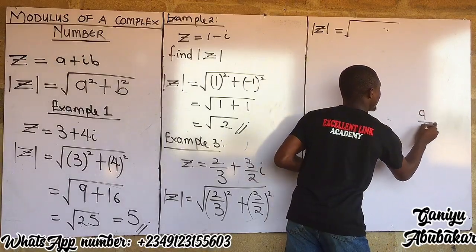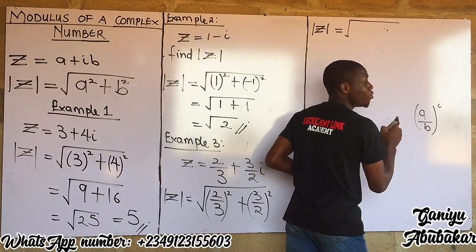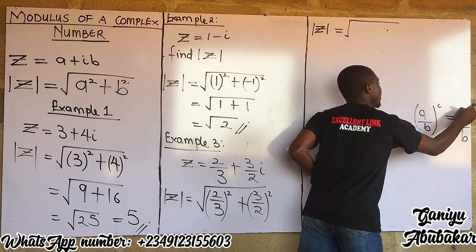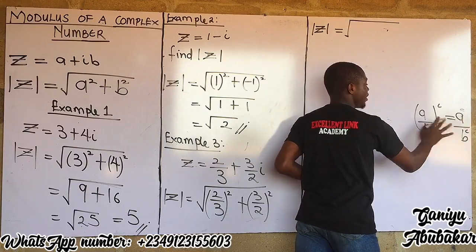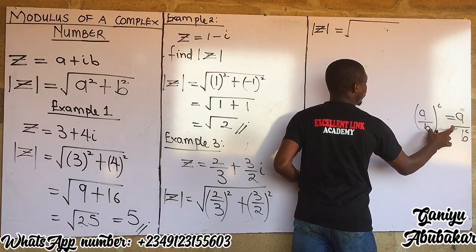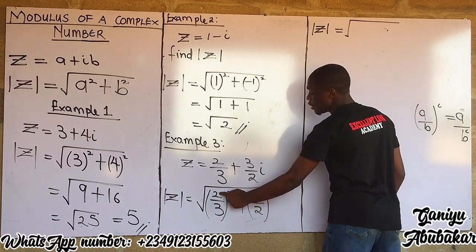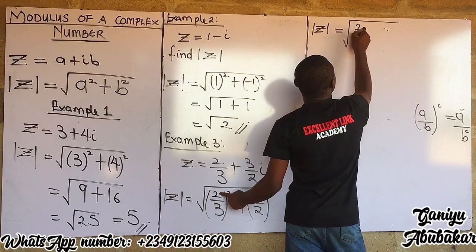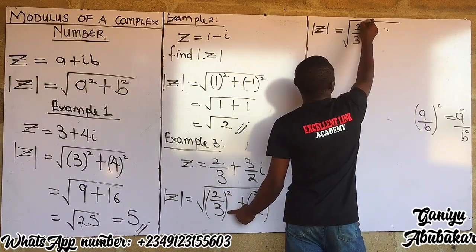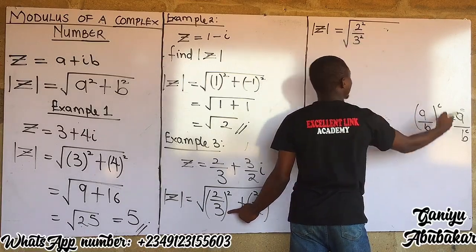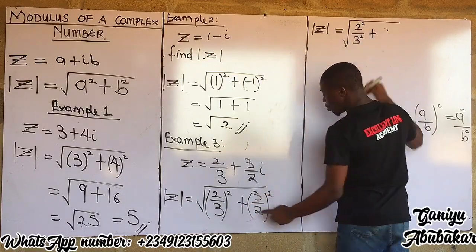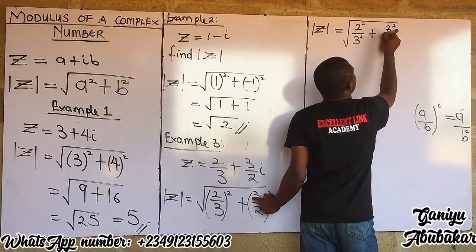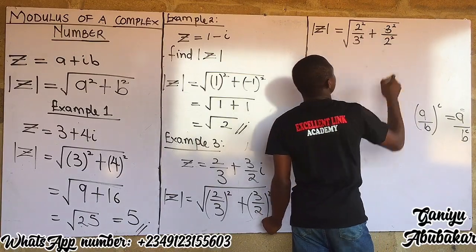From indices, if I have a over b all to the power c, this breaks down as a to the c all over b to the c. Applying this technique here: two-thirds squared becomes two squared over three squared, and three-halves squared becomes three squared over two squared. So the expression under the square root is two squared over three squared, plus three squared over two squared.